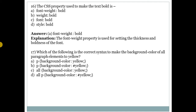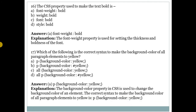Question number 17: which is the correct syntax to make the background color of all paragraph elements yellow? Answer is A — p { background-color: yellow; }. The element selector p is followed by curly braces containing background-color: yellow; with a semicolon. This is the correct syntax to change the background color of an element.